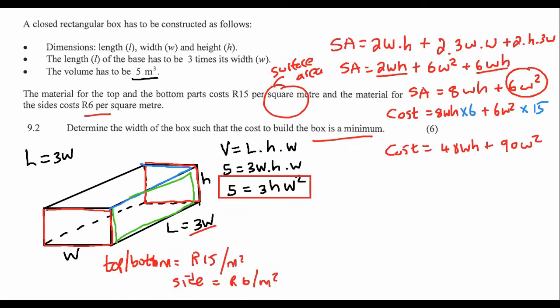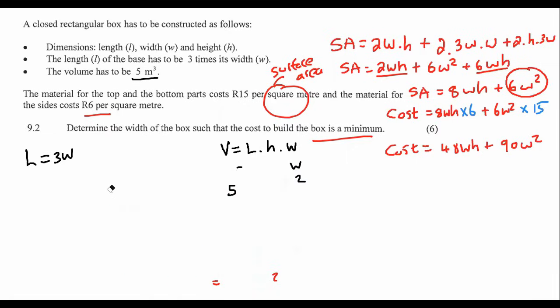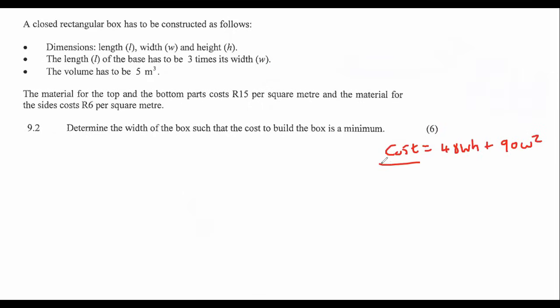Determine the width of the box such that the cost is a minimum. Not a problem at all. We knew they were going to say minimum and maximum eventually, because that's the way optimization works. So we would like to take the cost and we want to make it a minimum. If I have a graph and I want to find the maximum, it's this point. If I want to find the minimum, it's this point. How do you find minimums and maximums? It's when the first derivative is equal to zero.